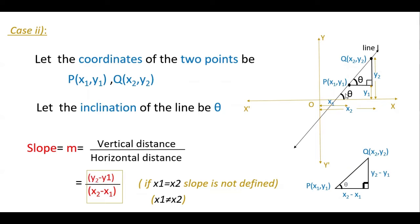This is the second case. In this case we have to find the slope if two points are on the line. Let the inclination of this line be theta, then this angle is also theta because these are corresponding angles. This is a transversal line and these are corresponding angles, so these angles are equal. Here we have to find the slope, so these are the two points. The vertical distance is y2 minus y1, because this is x1, y1, so this distance is x1 and y1, and this is y2 and x2. So the vertical distance is y2 minus y1 and the horizontal distance is x2 minus x1. So m is equal to vertical distance by horizontal distance, which is y2 minus y1 by x2 minus x1.